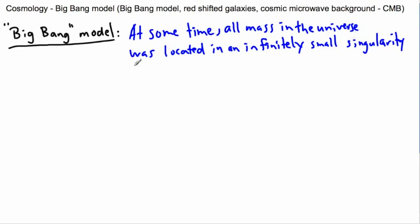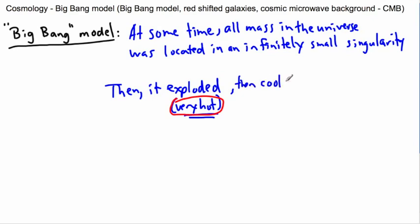And then for some reason, it exploded. When it exploded, things are very hot. That's the key thing. So it exploded, which made things very hot. After an explosion, things tend to cool. So it then cooled, made the hydrogen that we need, then made the stars, which eventually made us.